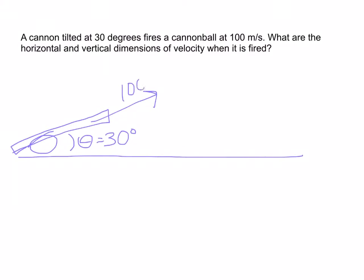What we want to do is draw this triangle right here and get it into its right triangle form. Let's draw that triangle. We know this is 30 degrees and 100 meters per second. I want to find out what this Y component and what this X component of velocity are.